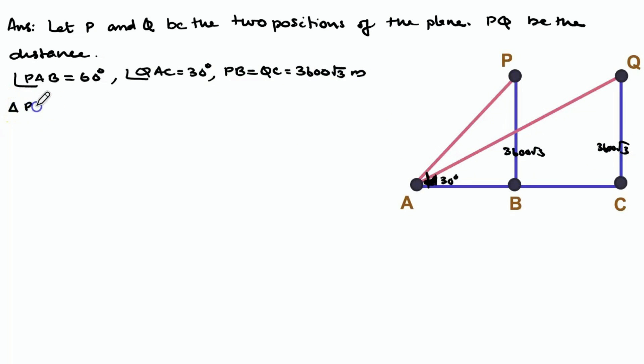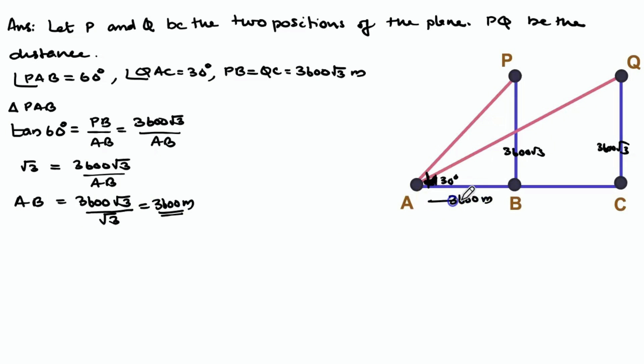In triangle PAB, tan 60 degrees equals BP divided by AB. 3600 root 3 divided by AB. The value of tan 60 degrees is root 3. Root 3 equals 3600 root 3 by AB. So AB equals 3600 root 3 divided by root 3. Root 3, root 3 cancelled. AB equals 3600 meters.